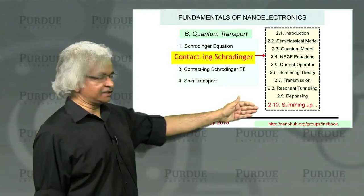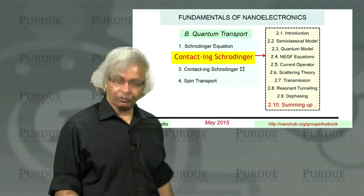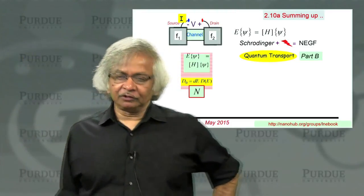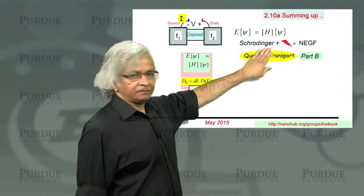It is now time to sum up what we did in this unit. In the last unit, Unit 1, we talked about the Schrodinger equation.